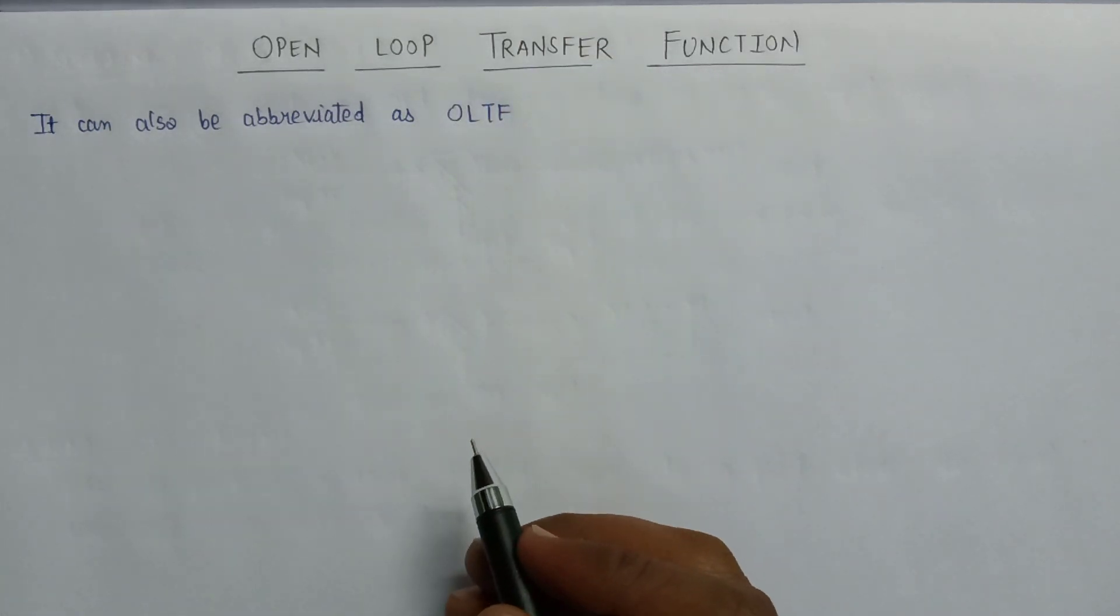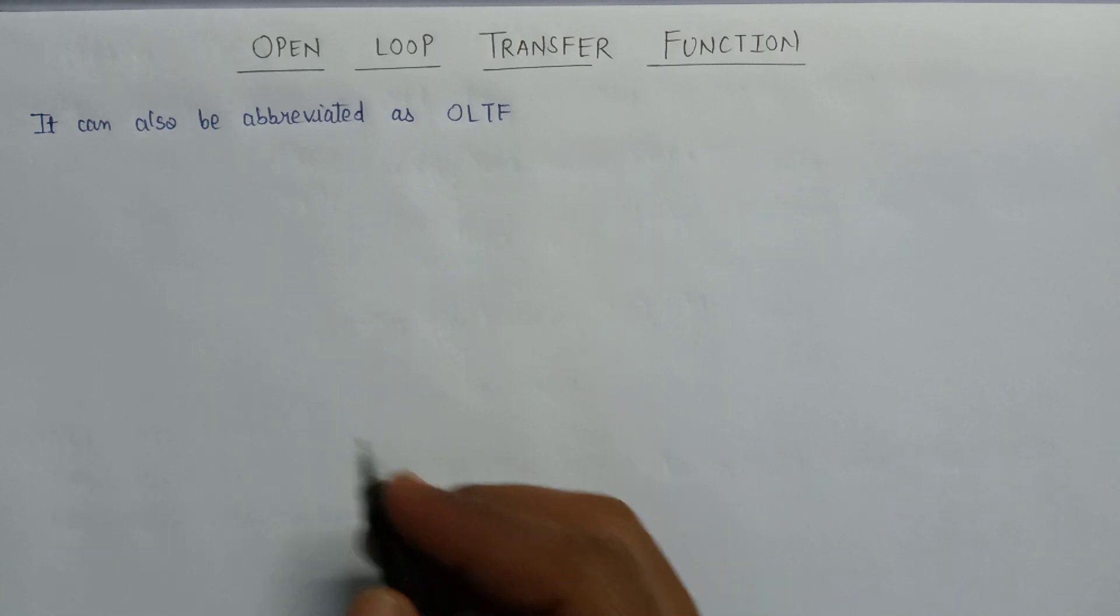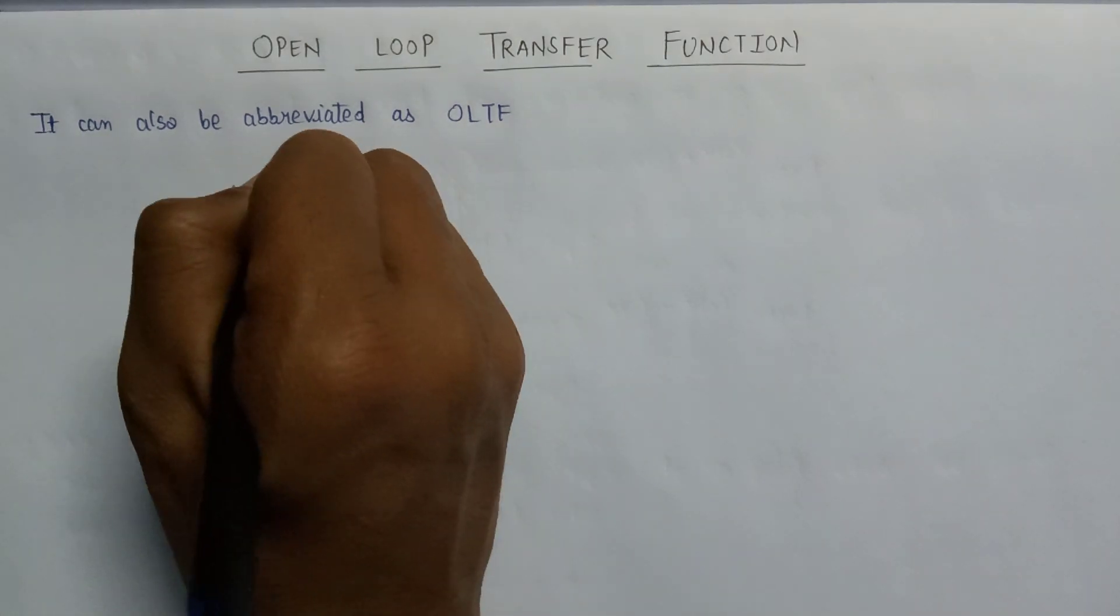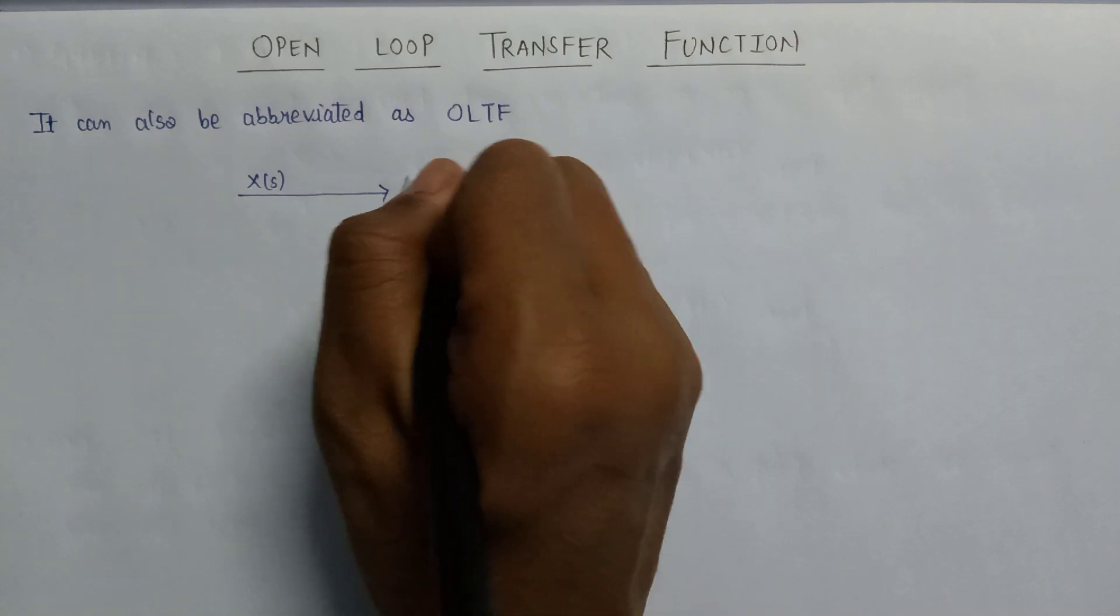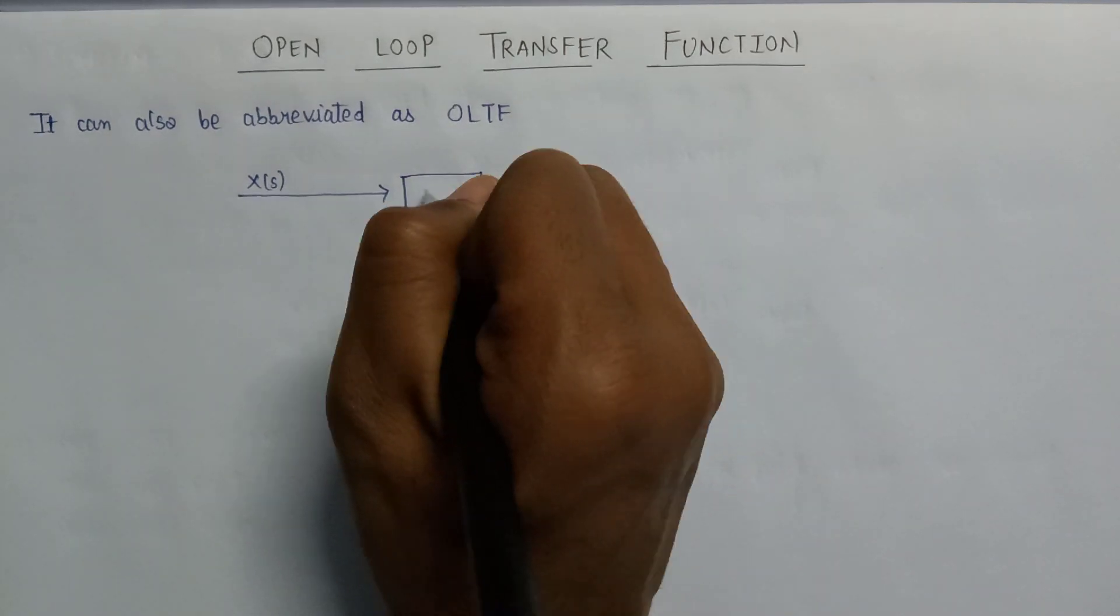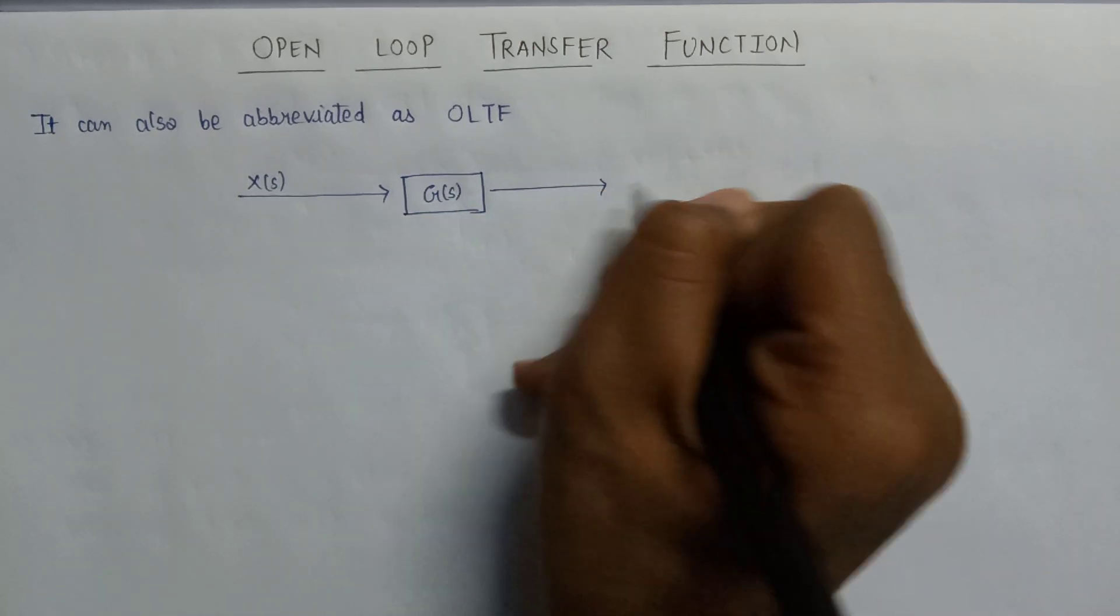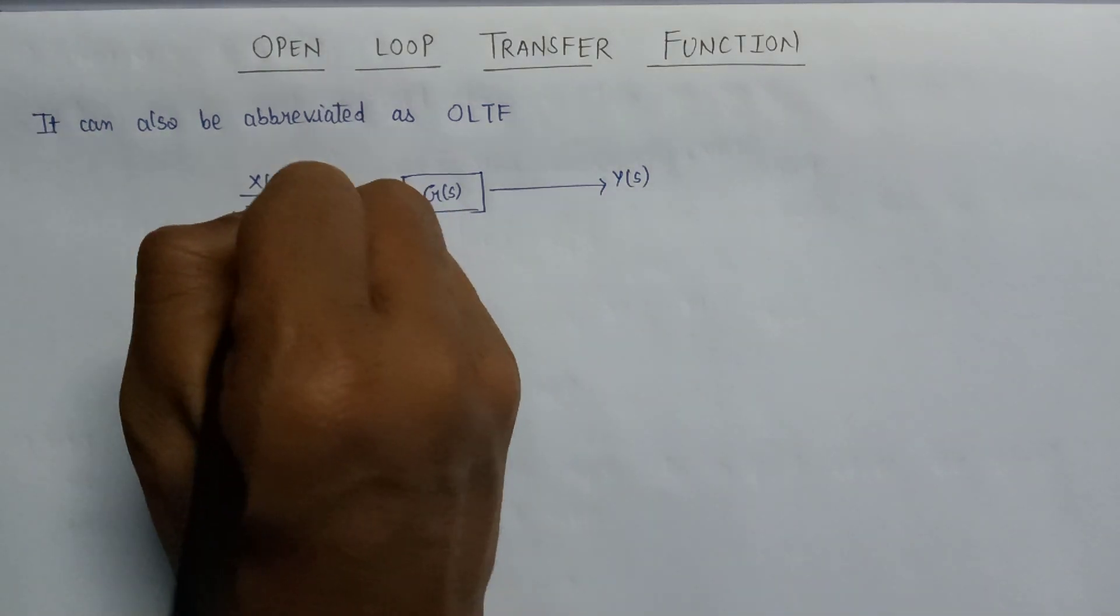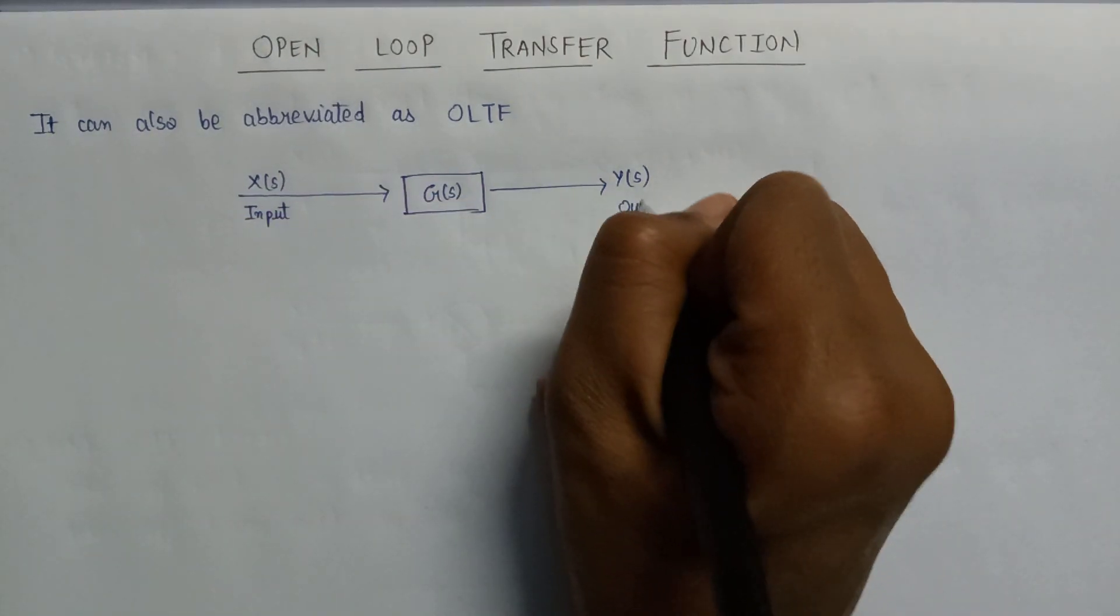Now let us consider a block diagram for the basic representation of open loop transfer function. Here is an input X which is applied to the block diagram having the gain G, and we are getting the output Y.